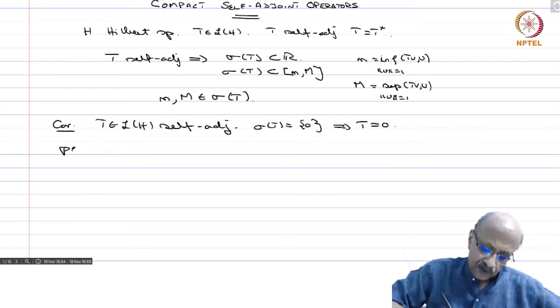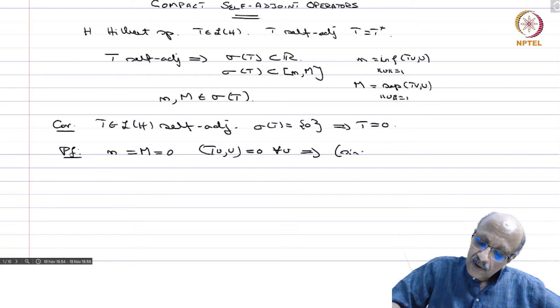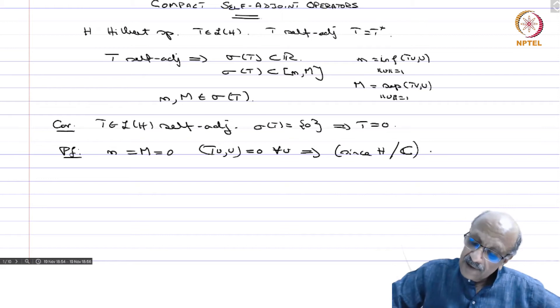Proof: we saw that if sigma T is 0 that means m equals M equal to 0 and therefore <Tv,v> equal to 0 for all v and this implies since H is over the complex numbers, T equal to 0. It is not true for the reals.